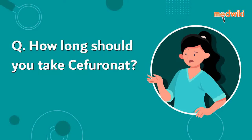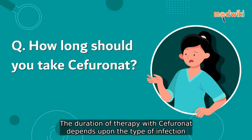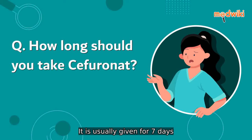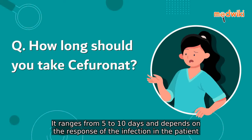How long should you take Speronit? The duration of therapy with Speronit depends upon the type of infection. It is usually given for 7 days, ranging from 5 to 10 days, and depends on the response of the infection in the patient.